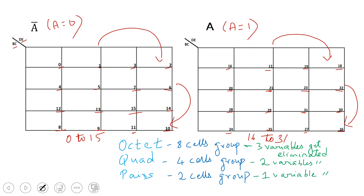The final minimized solution comes from forming the largest possible groups first: octet, then quad, then pair, then single cell — in that order. If you start with smaller groups instead of the octet, you will make a mistake. Always start from the octet and work down.